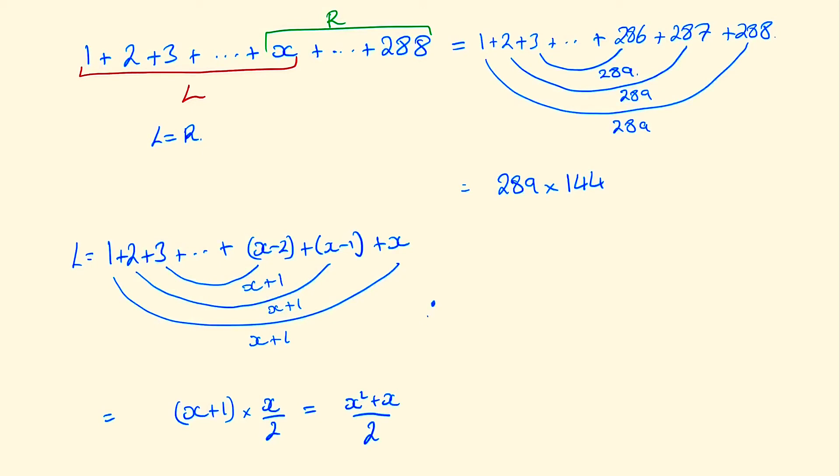And therefore we can say that the left side plus the right side will just be the left side times 2 which will then just become x squared plus x.